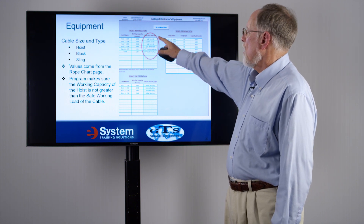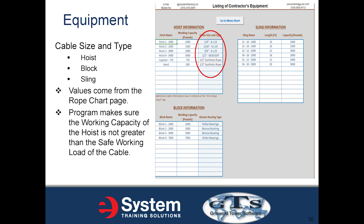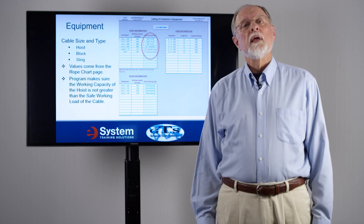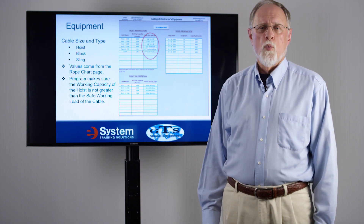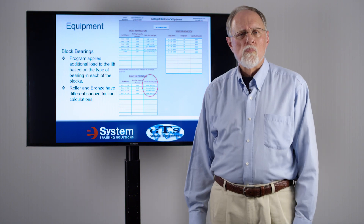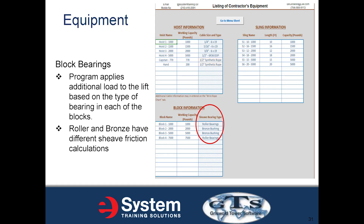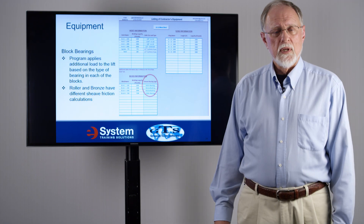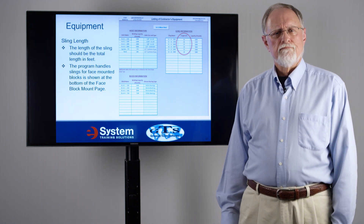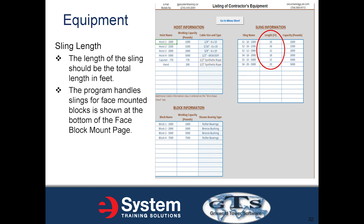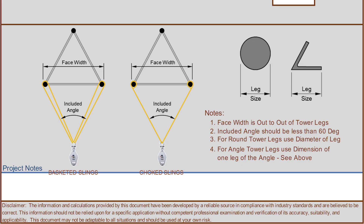The cable values come from the rope chart page, and the program ensures the working capacity of the hoist does not exceed the safe working load of the chosen cable — a warning will appear if it does. The program applies additional load to the lift based on the bearing types in each block; roller and bronze bearings have different sheave friction values that change the load calculation values. The length of each sling should be the total length expressed in feet, and the program handles slings for face-mounted blocks as shown at the bottom of the face block mount page.